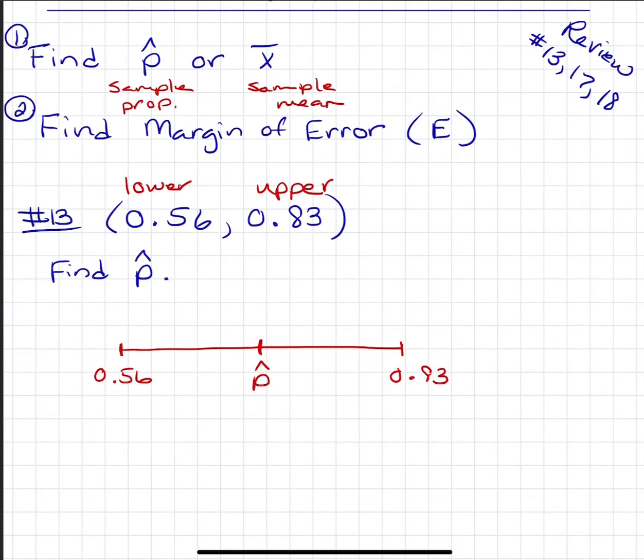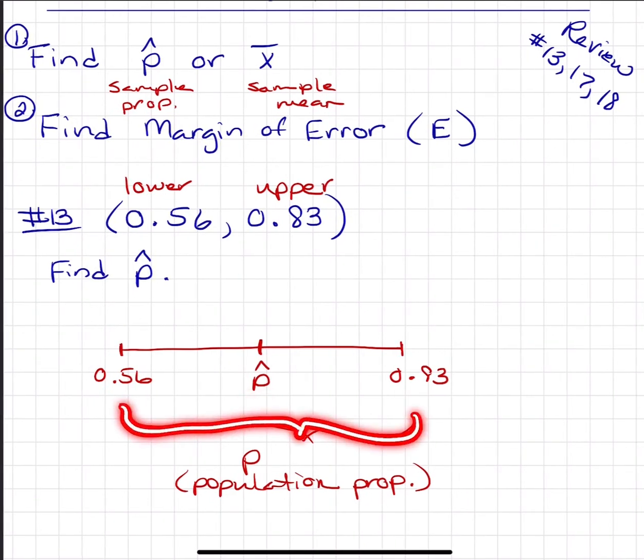So we're saying based off of this sample proportion, your population proportion or P is between those two numbers. We can't say it is exactly the same as the sample, but we can say within some margin of error it's between these two numbers.